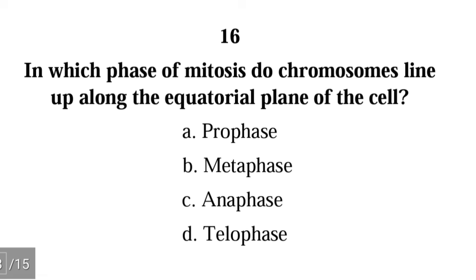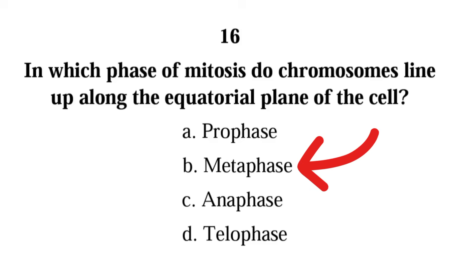Question 16: In which phase of mitosis do chromosomes line up along the equatorial plane of the cell? A) prophase, B) metaphase, C) anaphase, D) telophase. The correct answer is B) metaphase. During metaphase, the chromosomes line up at the center of the nucleus, known as the equator or metaphase plate.